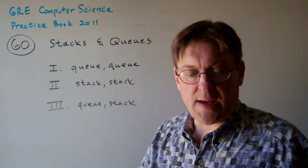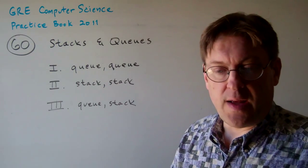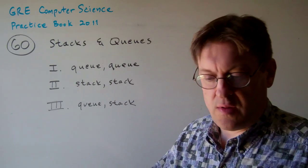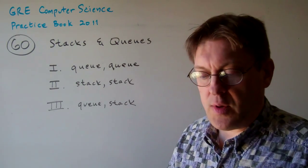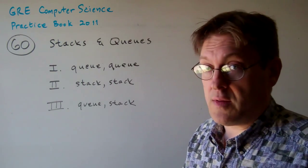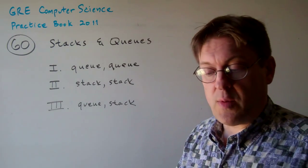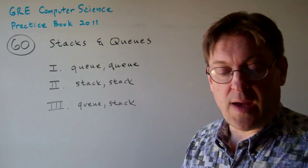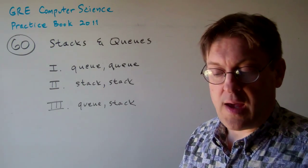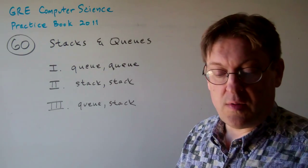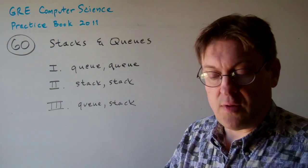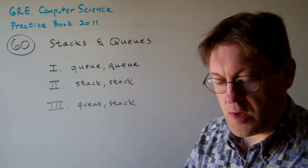Question 60. Suppose that stacks and queues are provided as opaque data types — that means you can't see inside how they work, just accept them as they are. They offer only operations to add elements, remove elements, and test for emptiness. Suppose a programmer wants to count the number of elements in a stack or a queue, which is currently in some state, using only one auxiliary stack or queue. The structures can be used in any way possible, but C must be restored to its original state after counting.